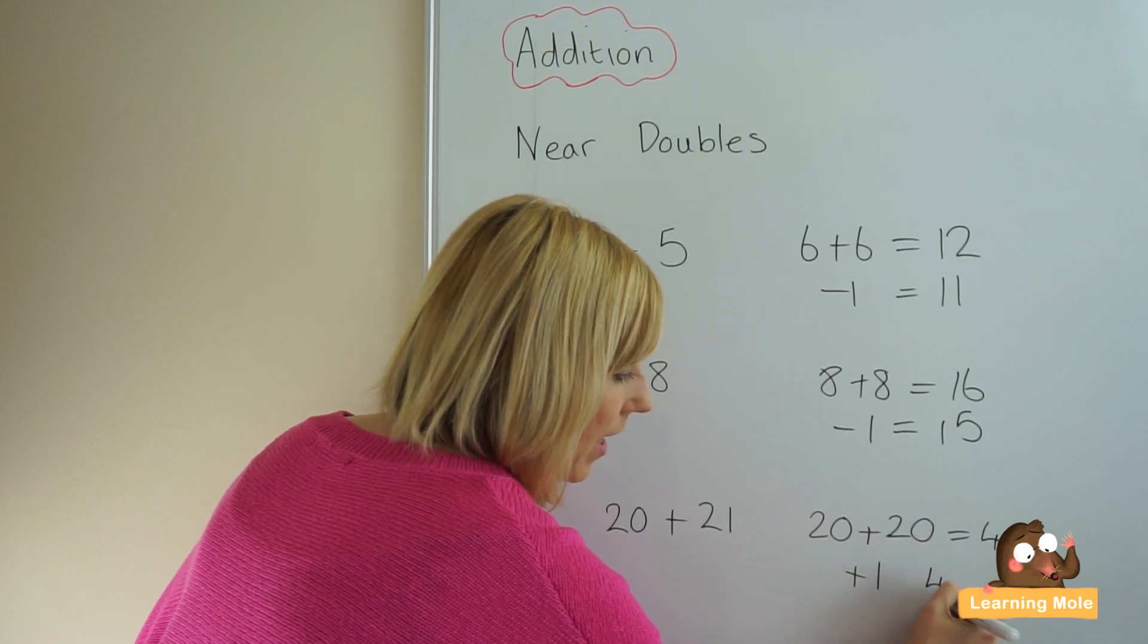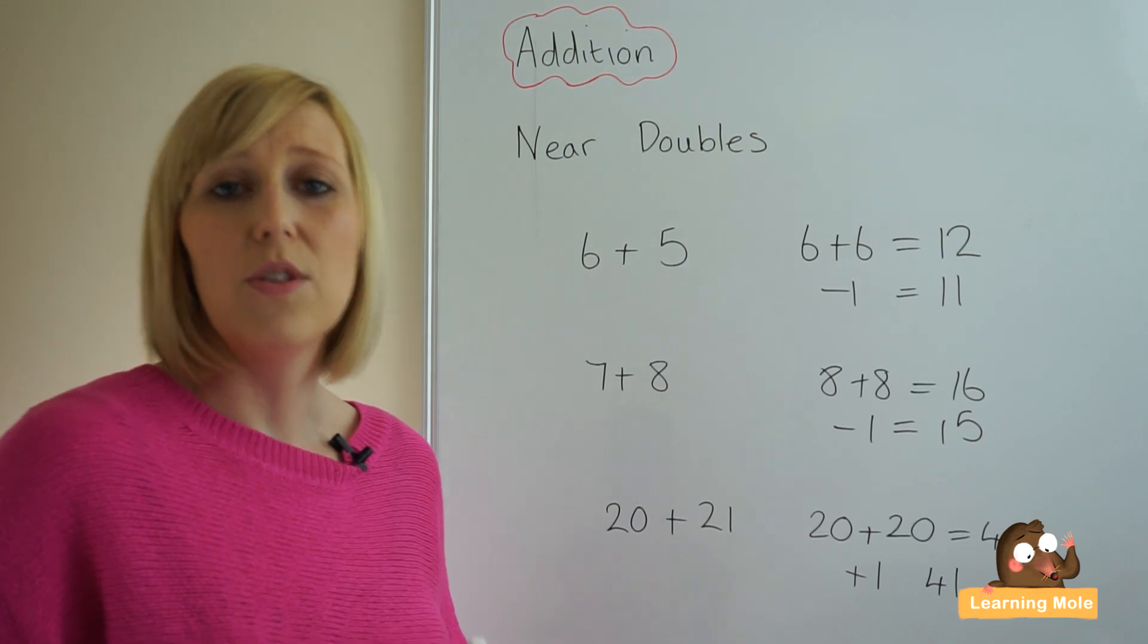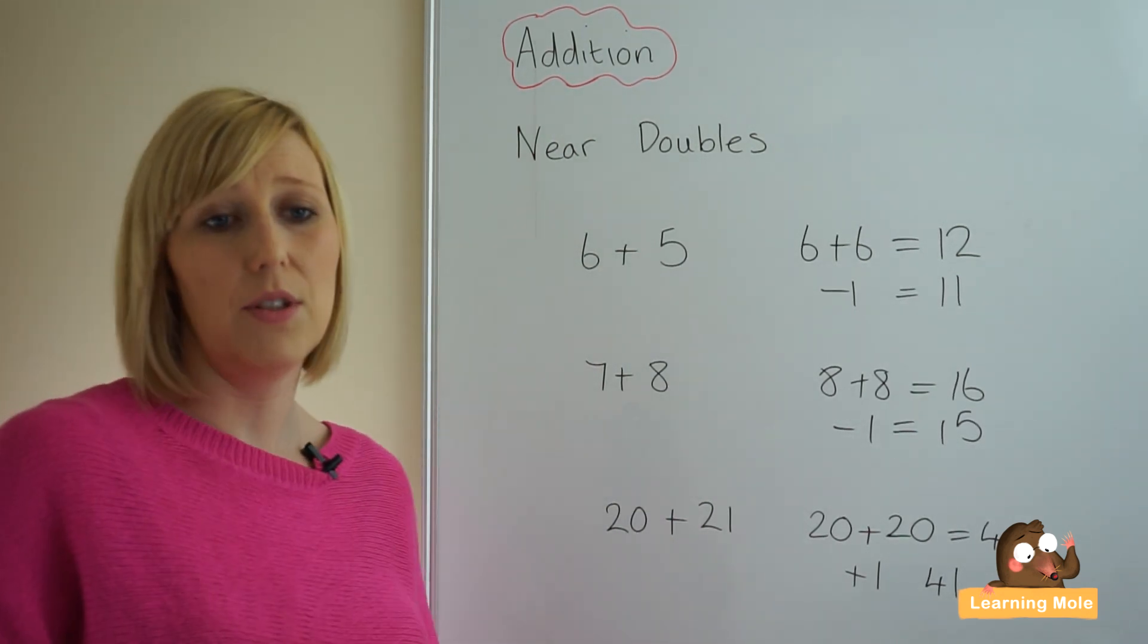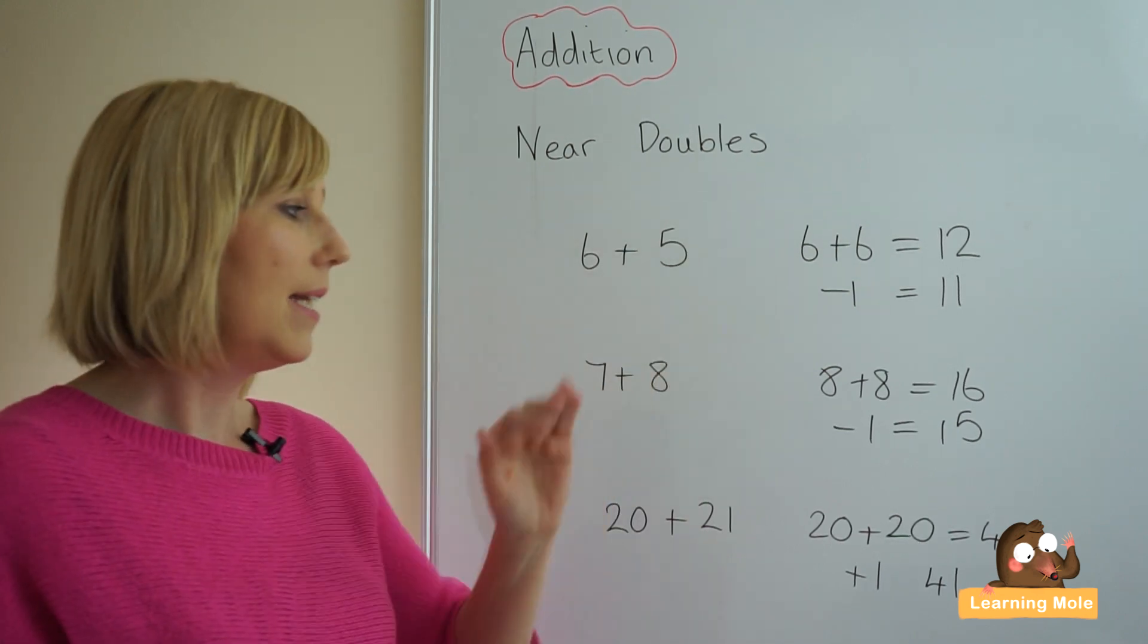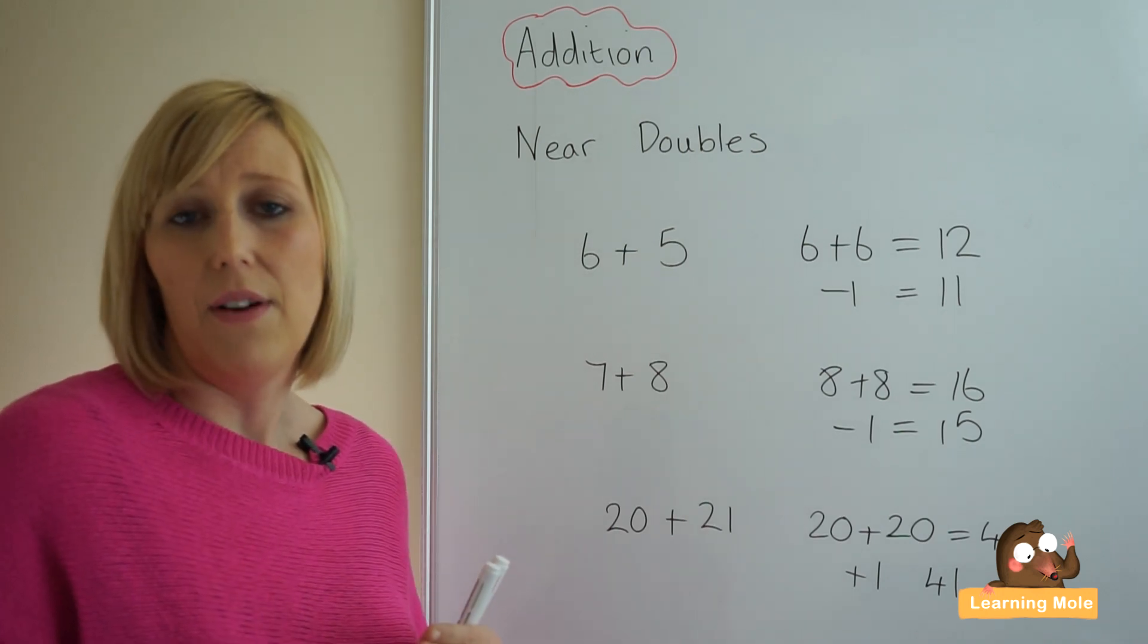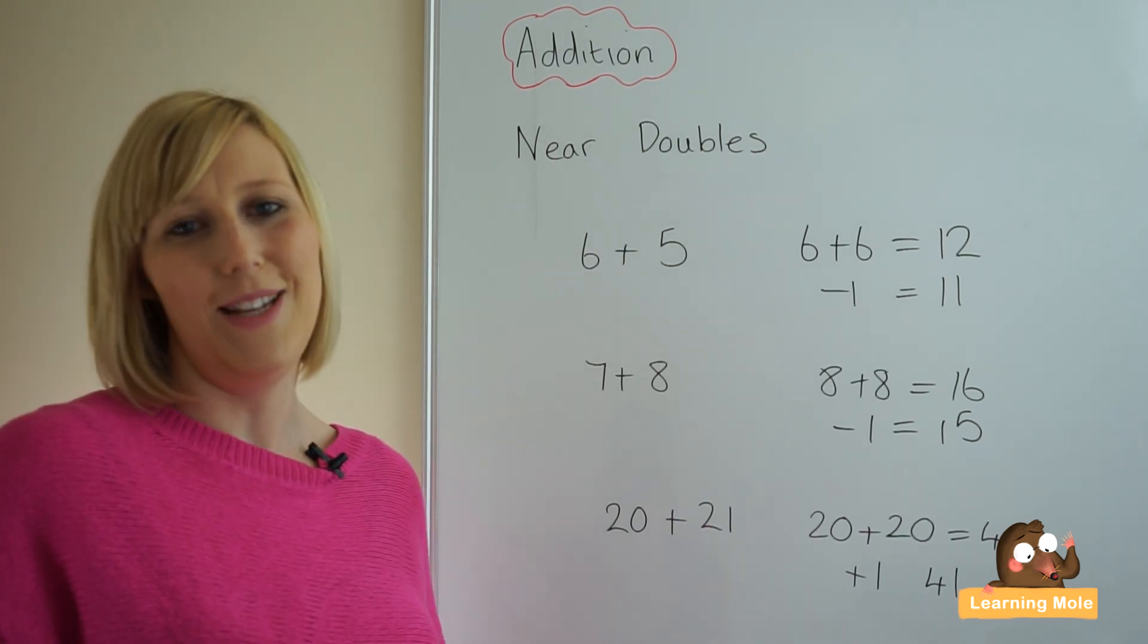We get 41. Really just using those known facts, those near doubles, identifying them to get to an answer that we adjust very easily by adding one or taking one away. They get to that number very easily. But of course, this only works when numbers are close to near doubles.